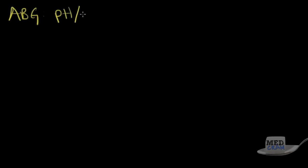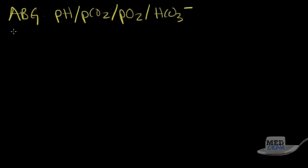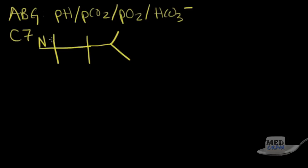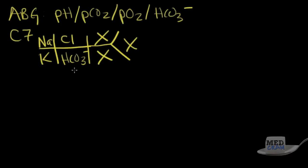We're going to have the pH first, then the PCO2 second, followed by the PO2, and then the bicarb last. For the CHEM7, we'll always see that pattern with sodium, potassium, chloride, and HCO3-. We're not really going to be talking about the blood urea nitrogen, creatinine, or glucose, so we'll just focus on those areas.